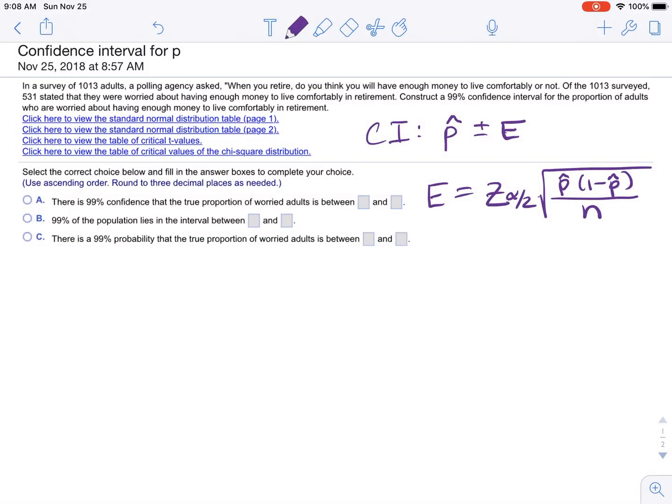All right, so we have a confidence interval for P. In a survey of 1,013 adults, a polling agency asked, when you retire, do you think you will have enough money to live comfortably or not? Of the 1,013 surveyed...